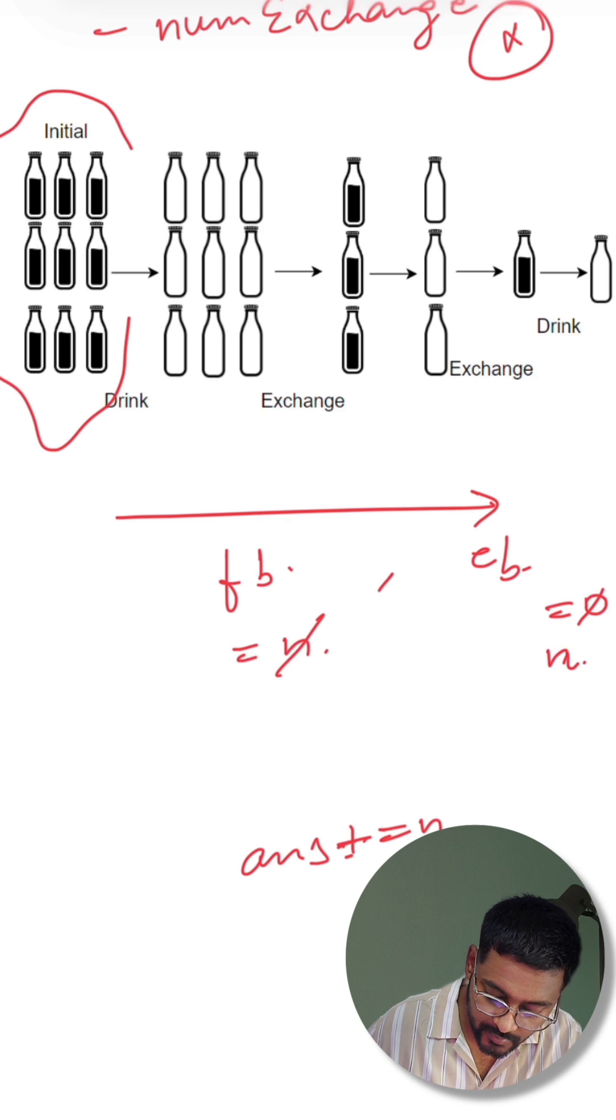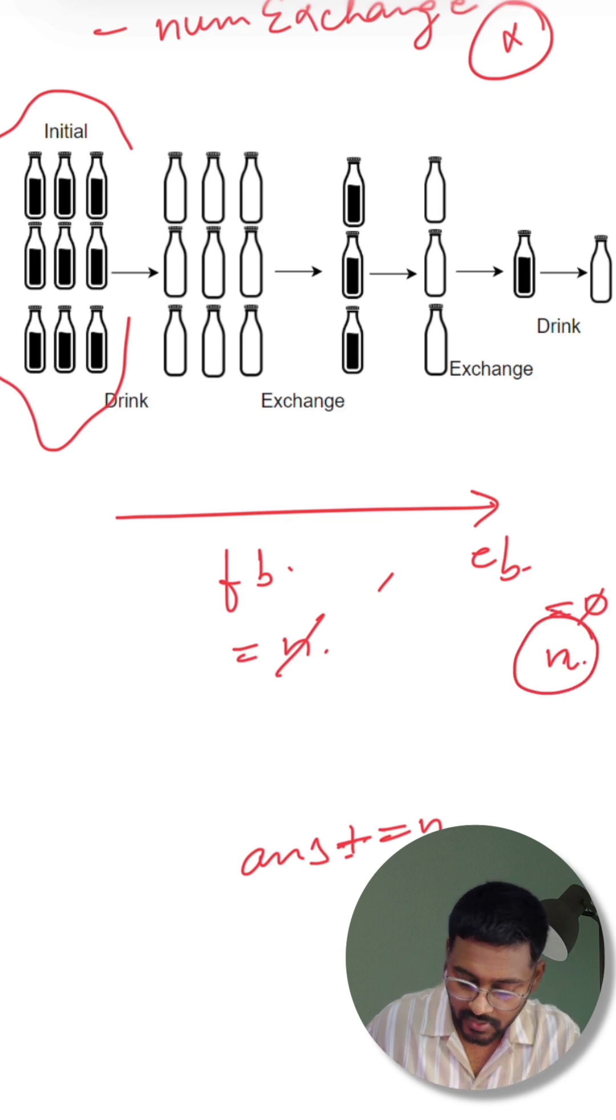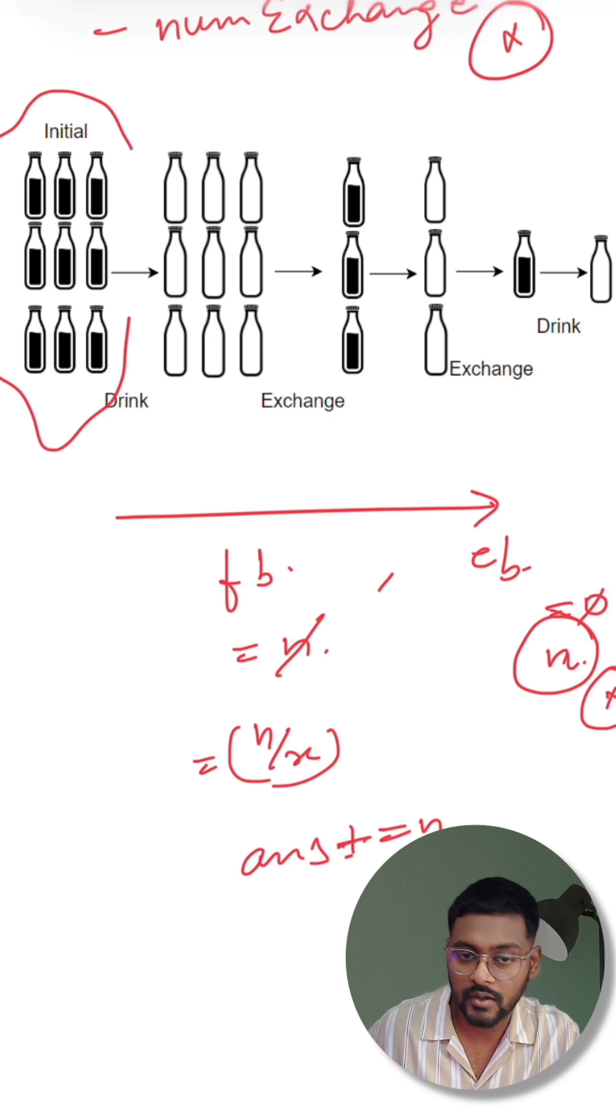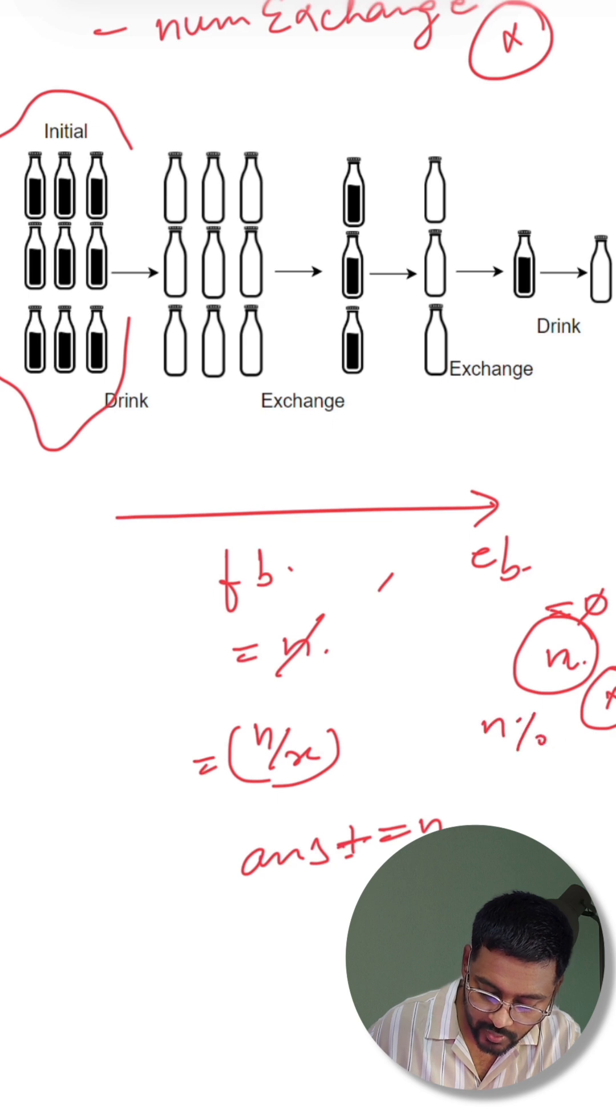Now the next step is from these N empty bottles, I can get every single collection of X bottles will be replaced with a filled bottle. So N by X number of filled bottles I will again get. And what are the remaining empty bottles? That will be N modulus X. So this is the thing that we need to understand.